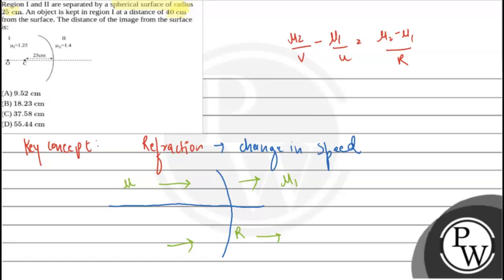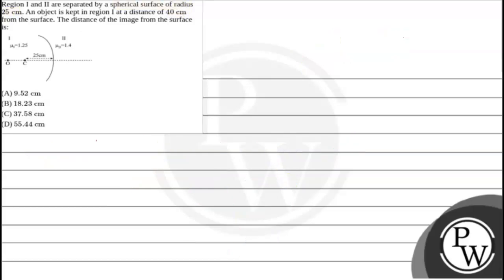Here, v represents the distance of the image formed from the pole of the surface, and u is the distance of the object from the pole of the surface. We are given the distance of the object from the surface, which is u equals 40 cm, and the radius of curvature of the spherical surface is 25 cm.